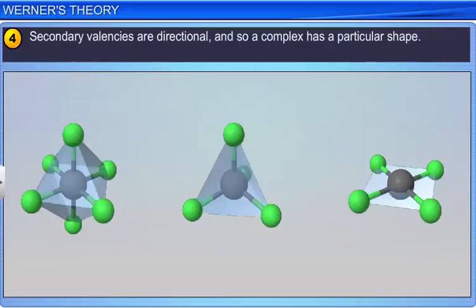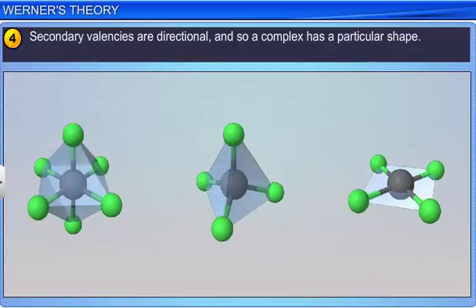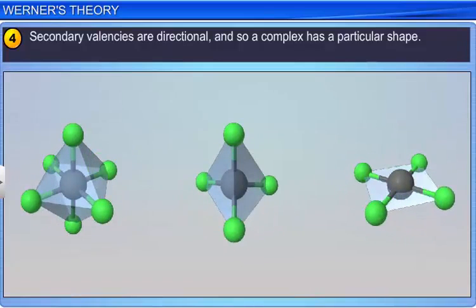The fourth postulate is that secondary valencies are directional, and so a complex has a particular shape.